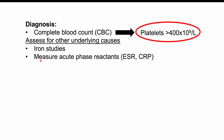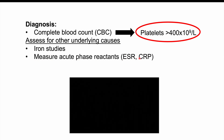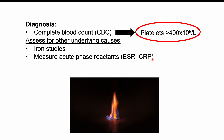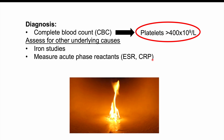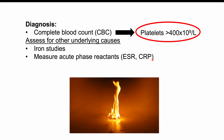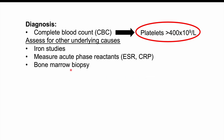It's important to measure acute phase reactants as well — ESR and CRP — as there may be some systemic inflammation that's also leading to an elevation in thrombocytes or platelets. Bone marrow biopsy may be necessary in patients who are suspected of having some malignancy, CML for instance.